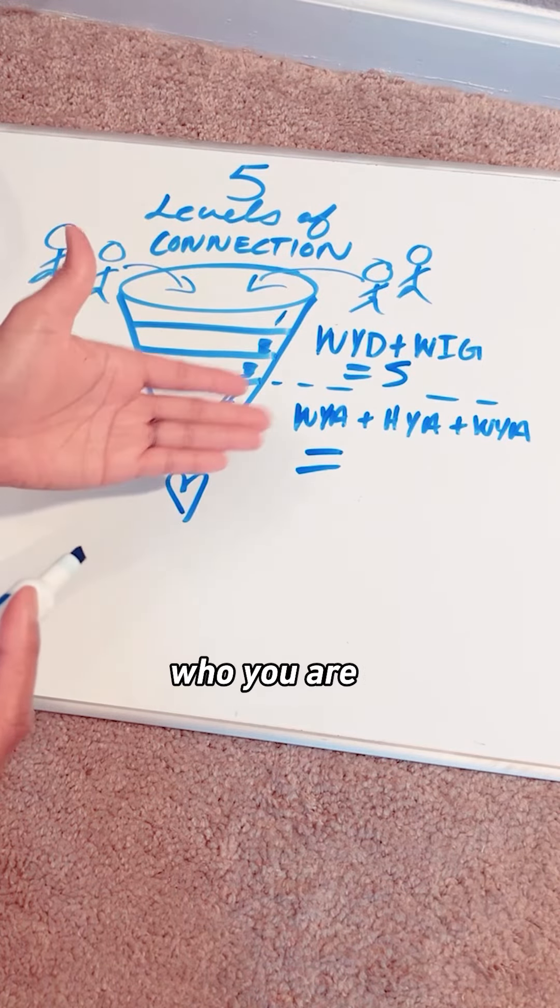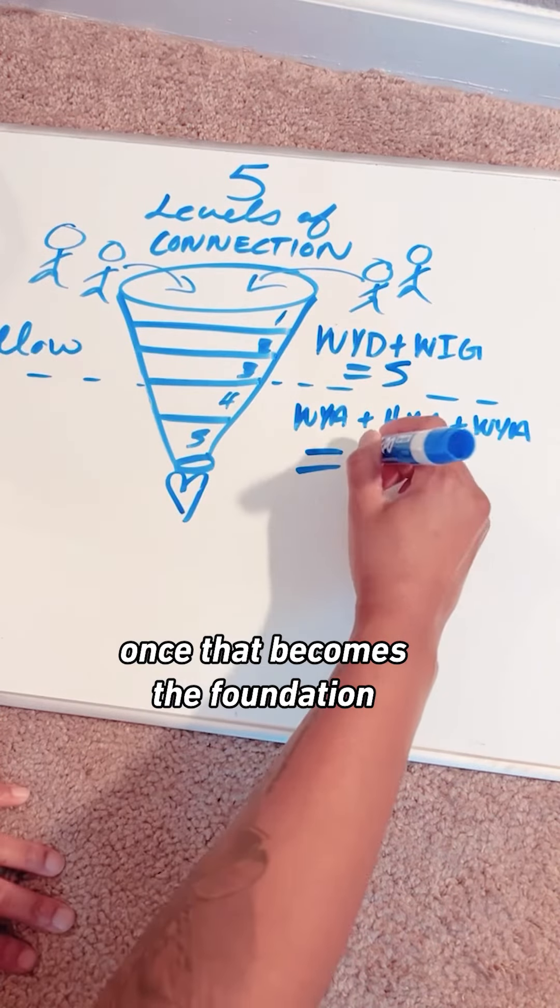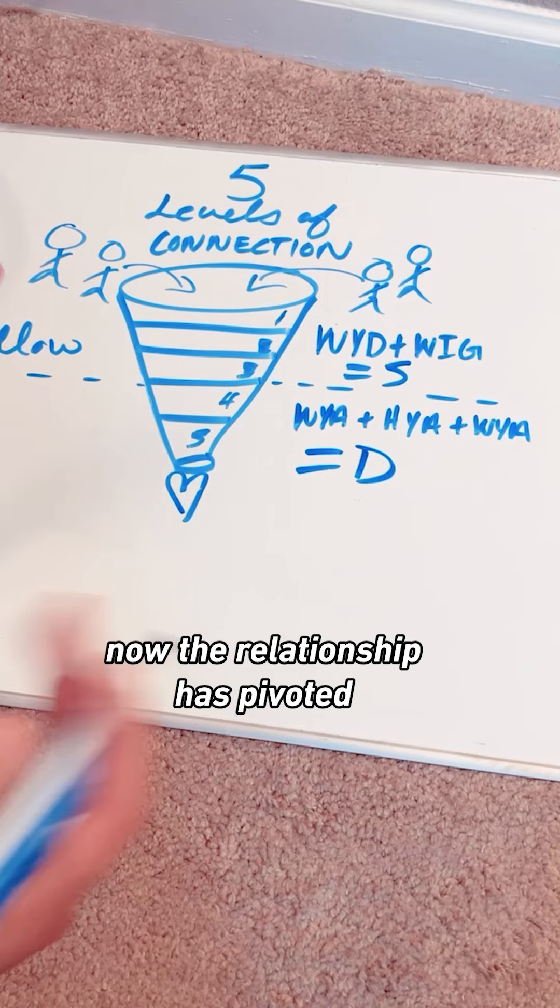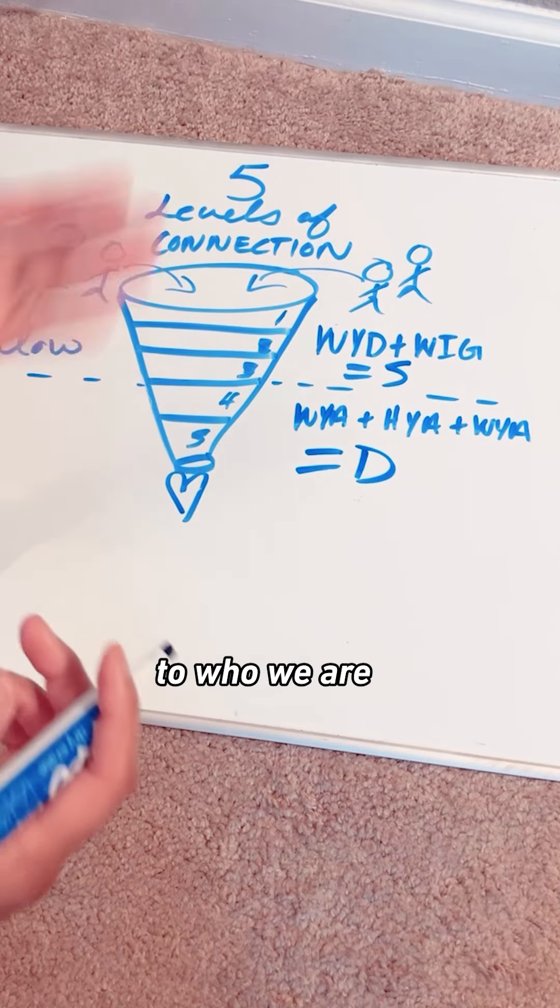Then you have to start thinking about who you are, how you are, why you are, for yourself and the other person. Once that becomes the foundation of your relationship, now the relationship is pivoted from just being about what we're doing to who we are.